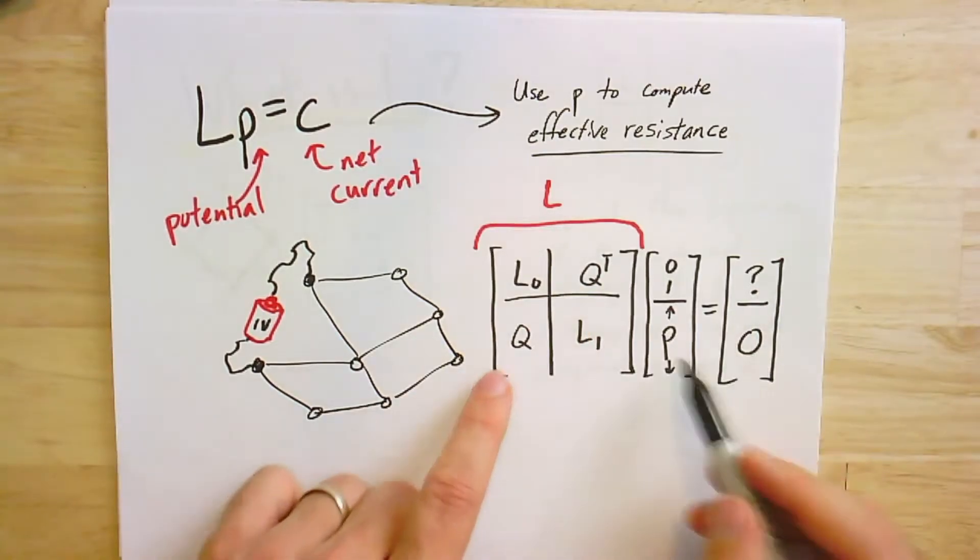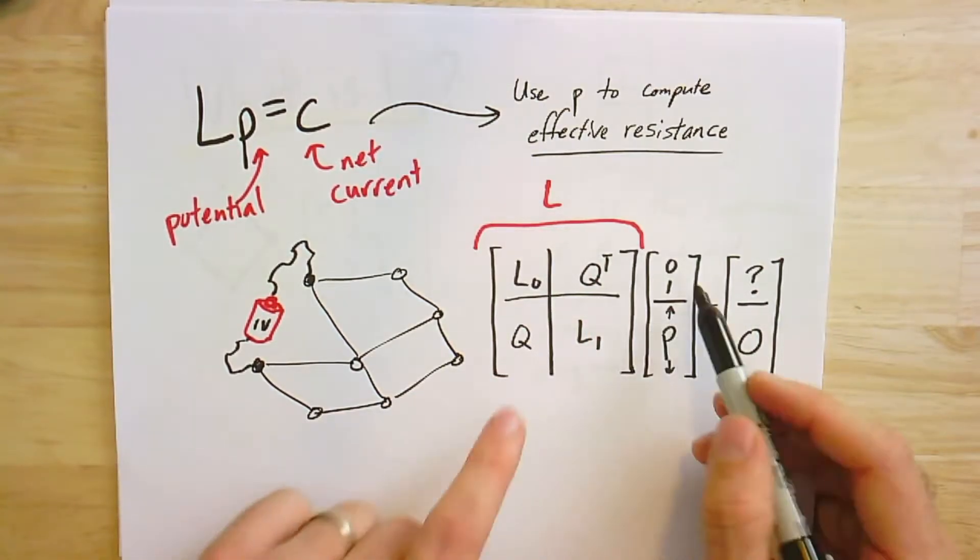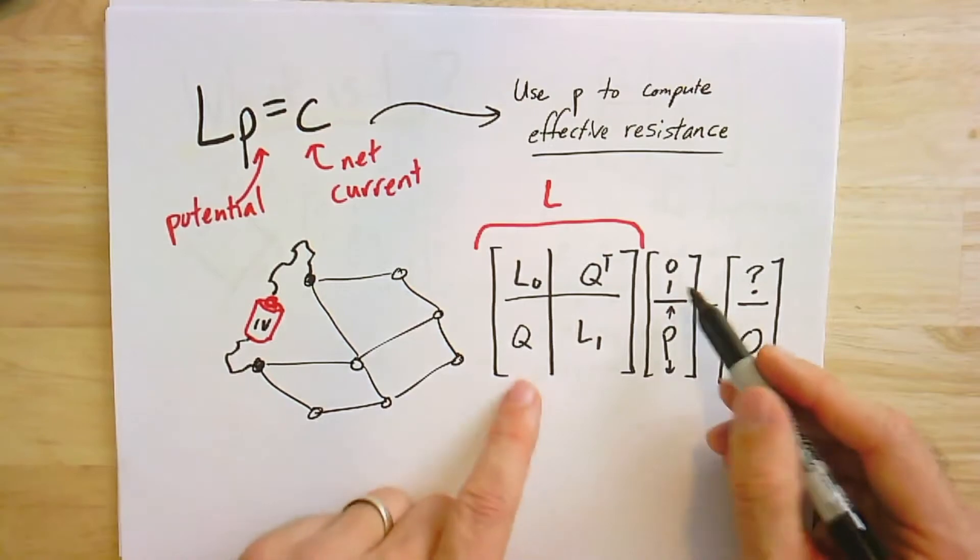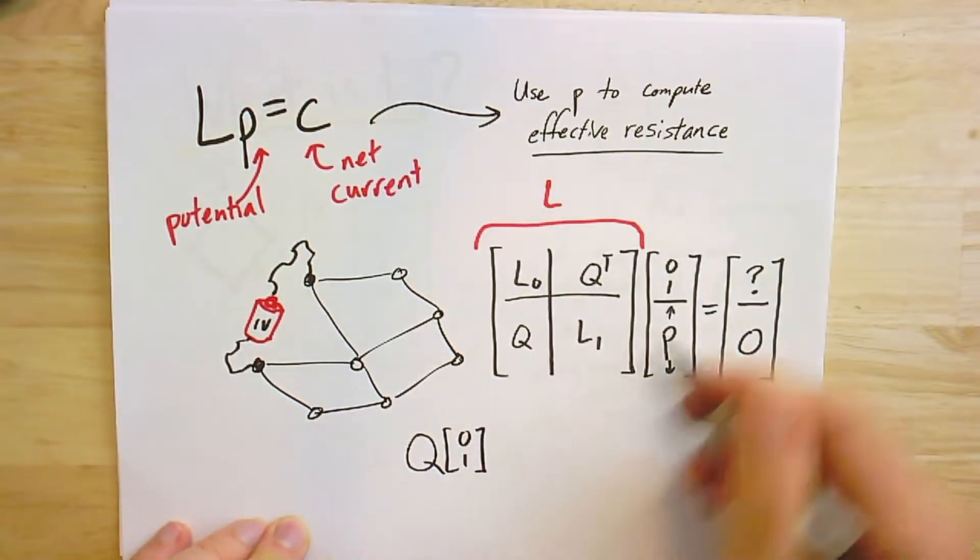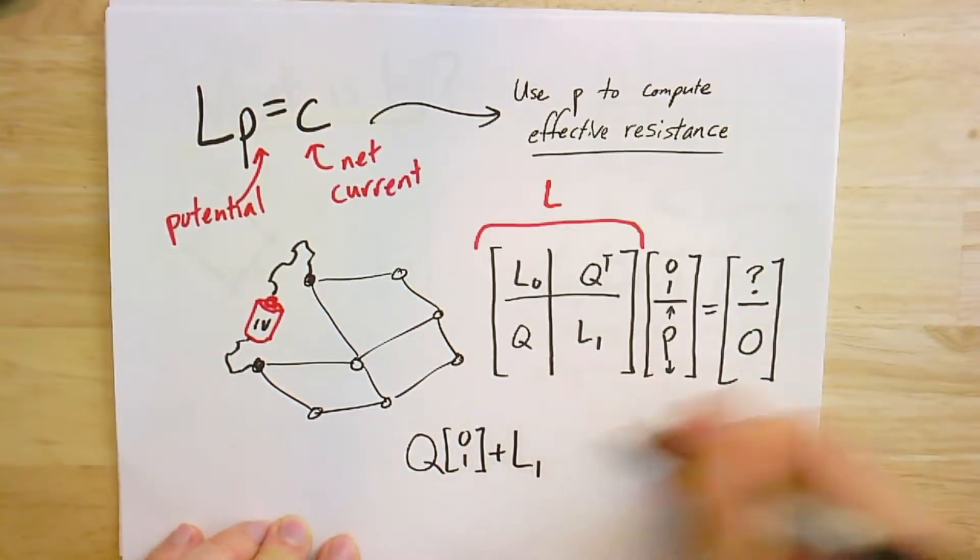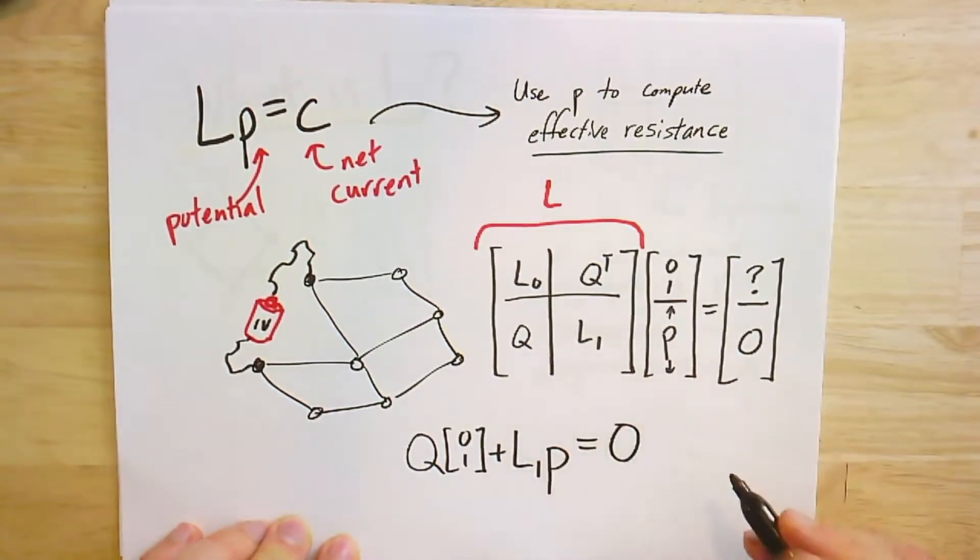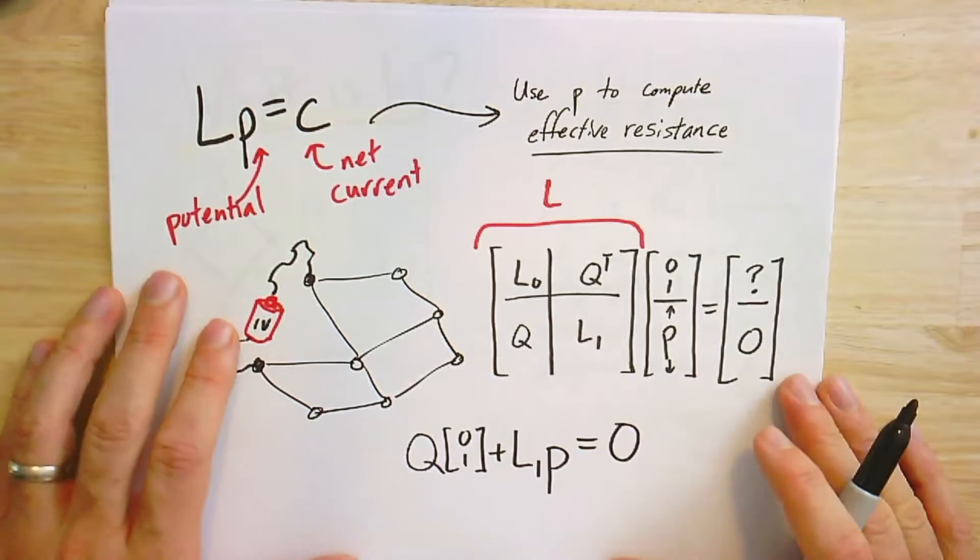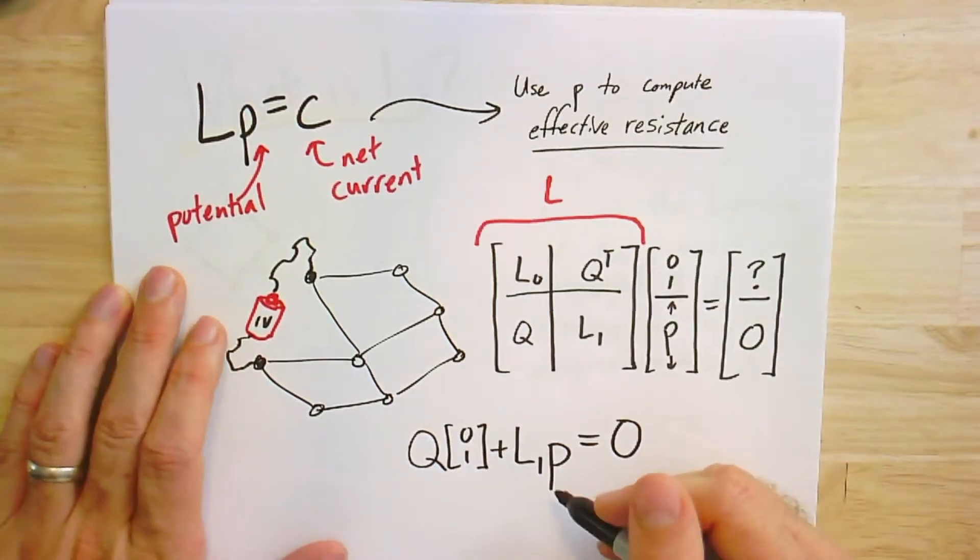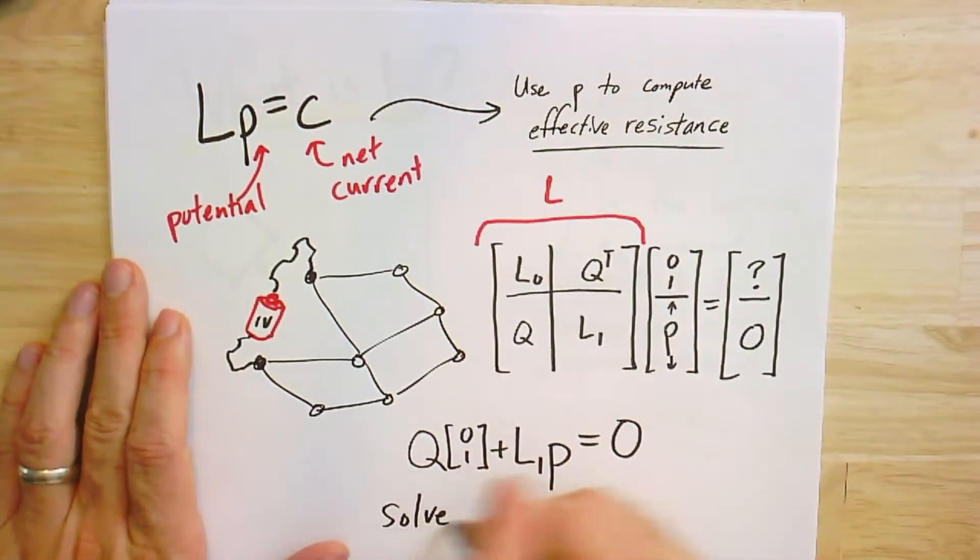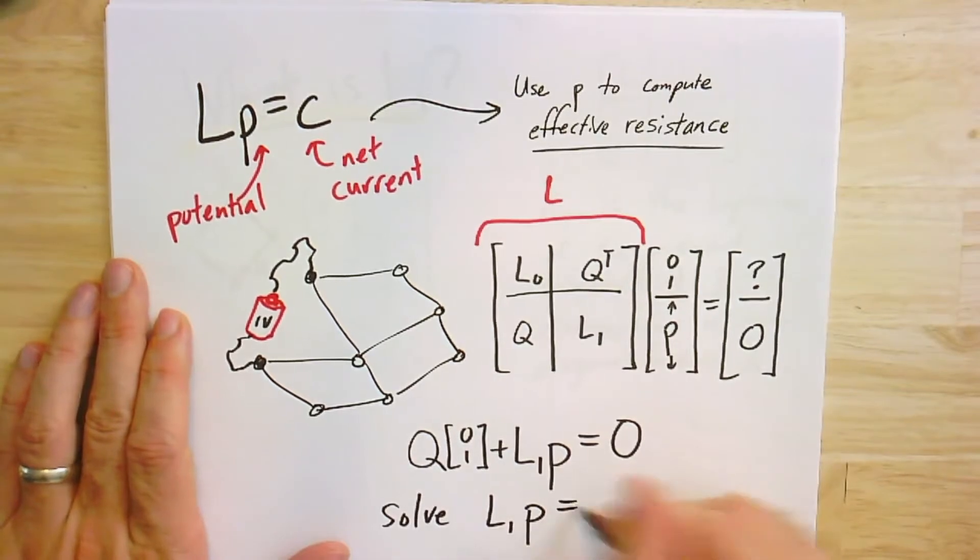So what does that look like? It's something like saying that this question mark would be L0 times this [0,1] vector plus Q transpose p, but we don't care actually what that current is. We'll figure it out later. Let's figure out what p is.